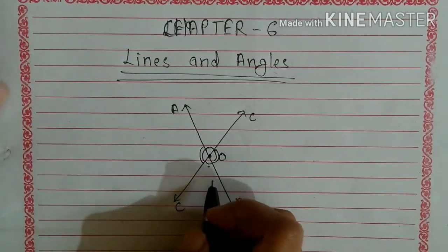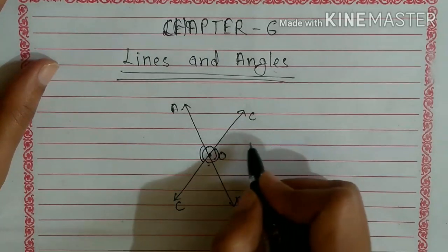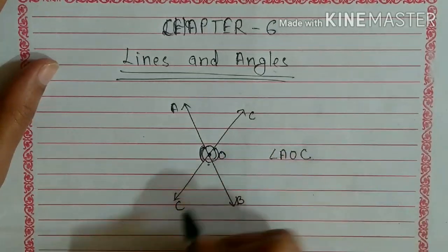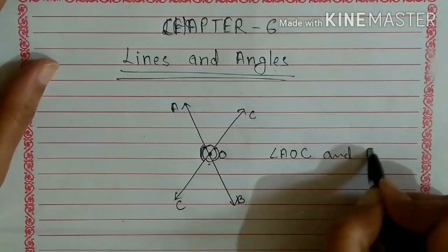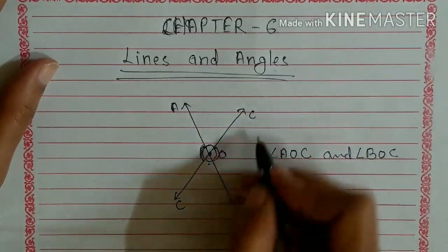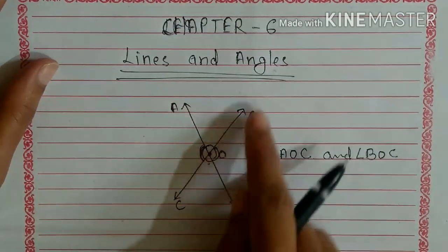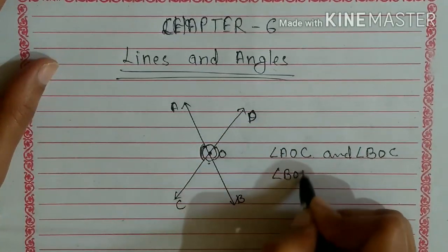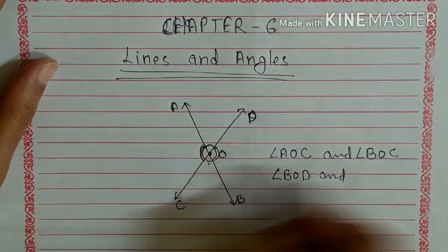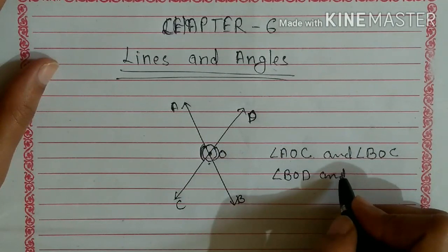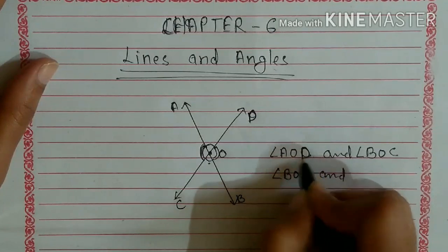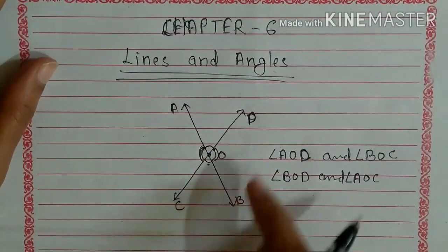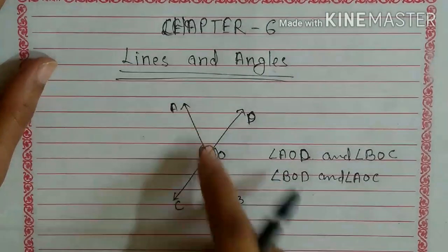There are two pairs of vertically opposite angles formed. The first pair of vertically opposite angles is AOC and BOD. The second pair is AOD and BOC.